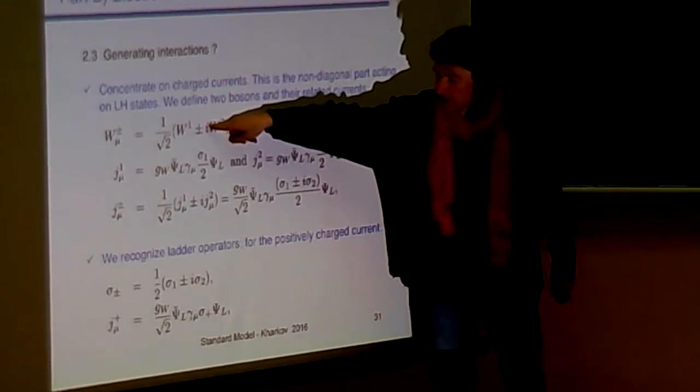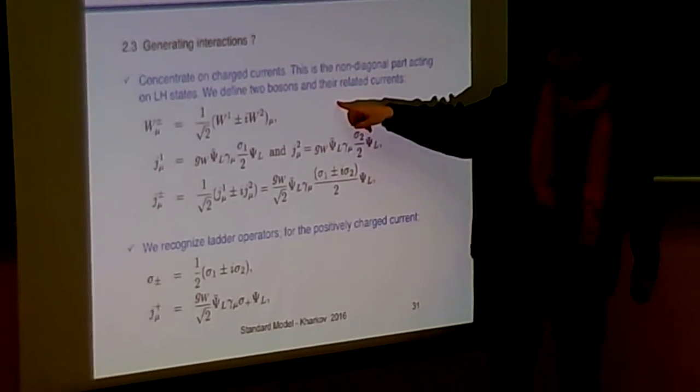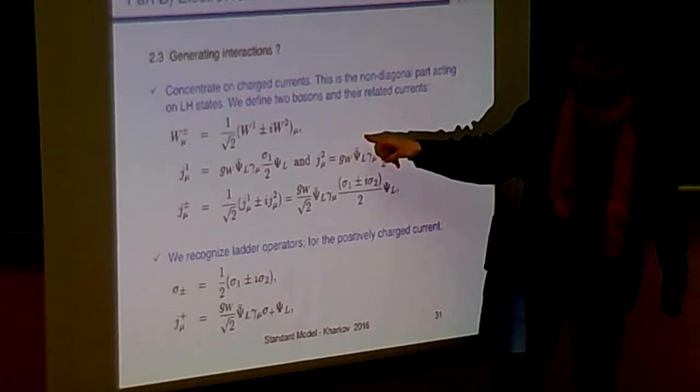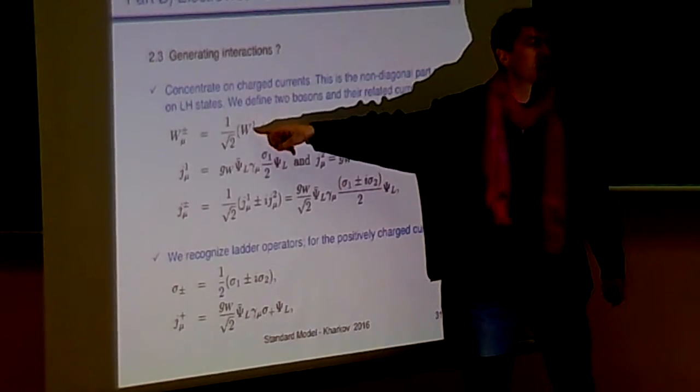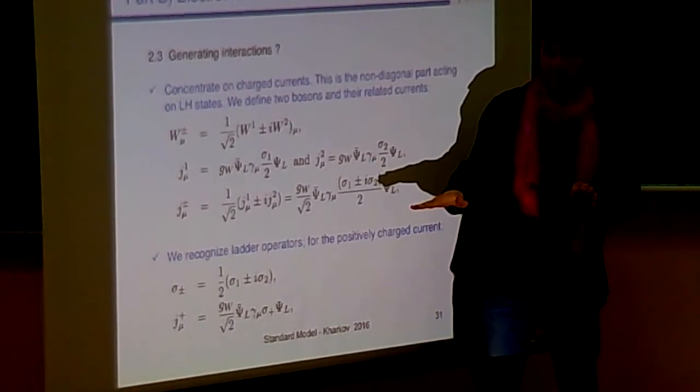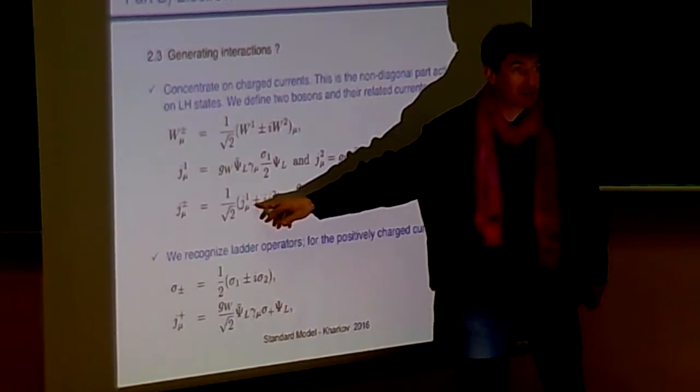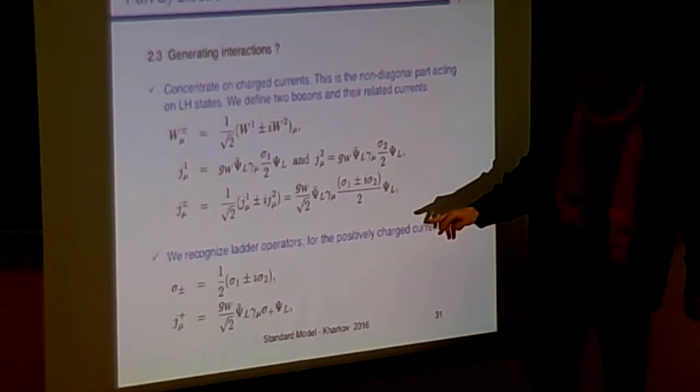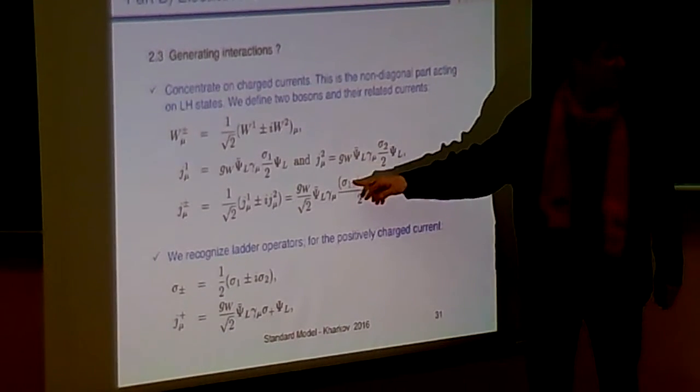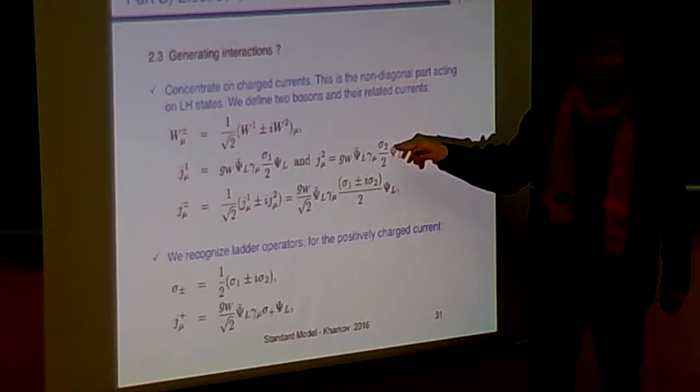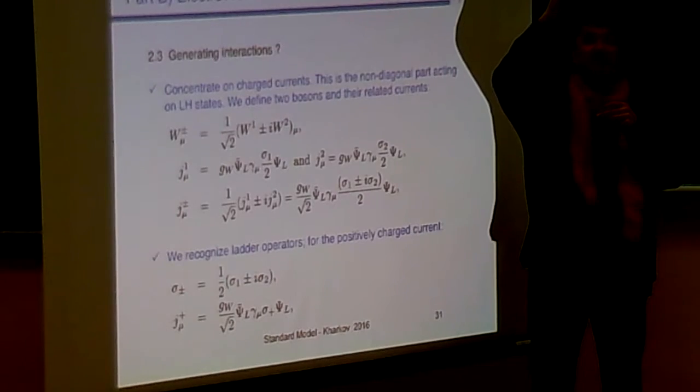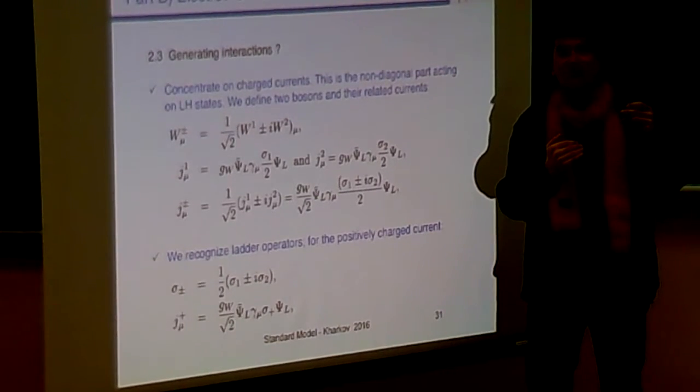And that's quite straightforward. Instead of building g1 and g2, to build the sum and the difference of g1 and g2. So the current is W plus or W plus. And you find back, if you do this calculation, the ladder operators, you find back the Pauli matrices sigma 1 plus or minus i sigma 2, which is just increasing of one unit of isospin or decreasing one unit of isospin.